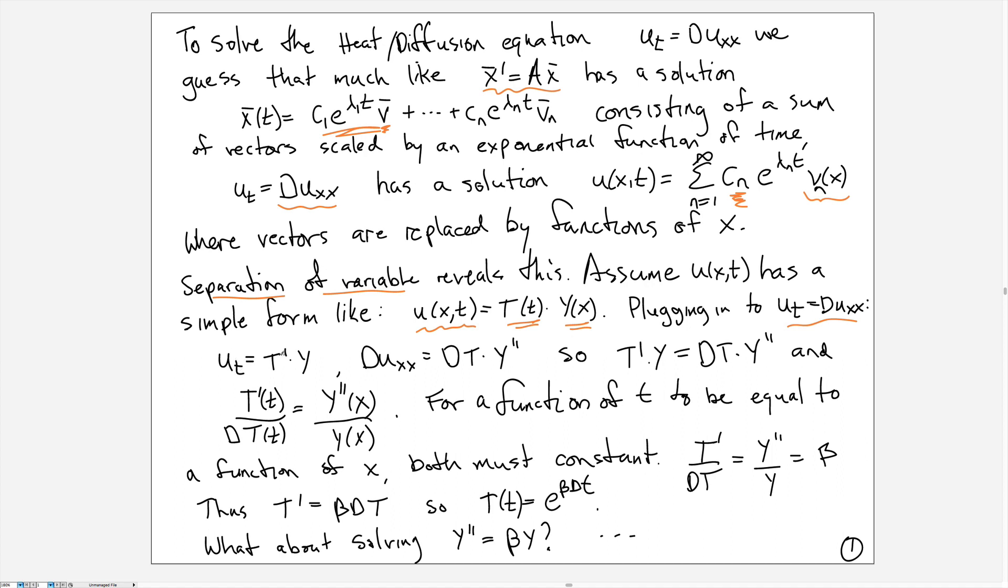On the left-hand side, we get T' times Y. On the right-hand side, we get D times T times Y''. We can equate those: T'Y = DTY''. Dividing through by Y and then by T, we get T'/(DT) = Y''/Y.